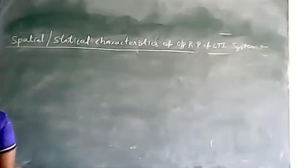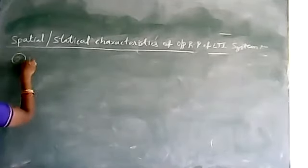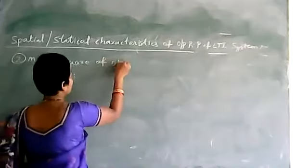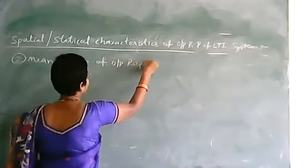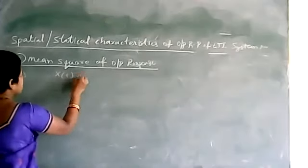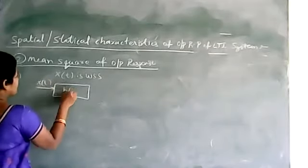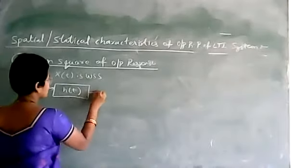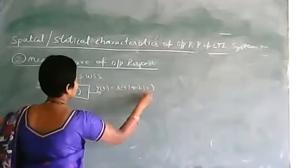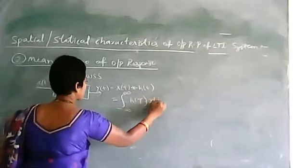The second spatial or statistical characteristic of the output random process of an LTI system is the mean square of the output response. Here we consider x(t) as the input, where x(t) is a wide-sense stationary random process. We apply x(t) as input to the LTI system h(t), so that y(t) equals x(t) convolved with h(t), which can be written as the integral from minus infinity to plus infinity of h(τ) · x(t − τ) dτ.